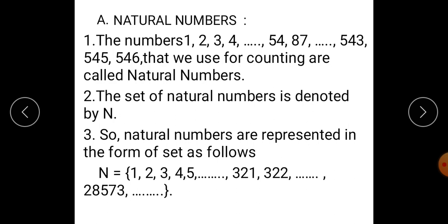The set of natural numbers is denoted by capital N. So, natural numbers are represented in the form of set as follows. Capital N is equal to in brace bracket we have to write numbers 1, 2, 3, 4, 5,